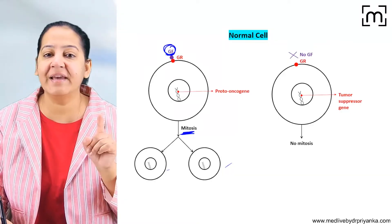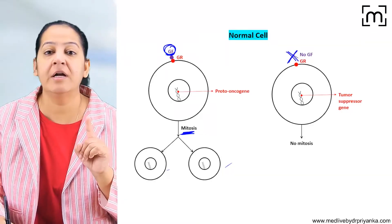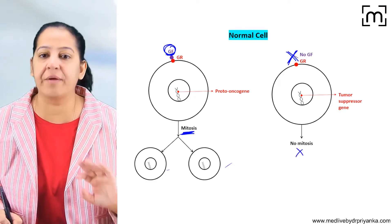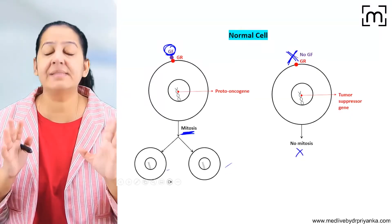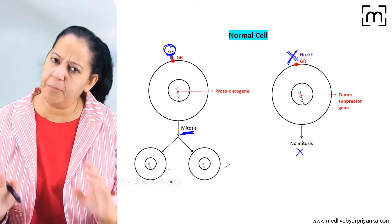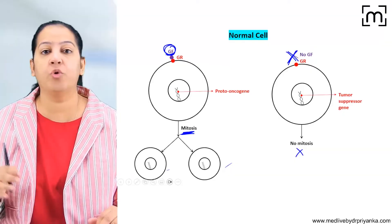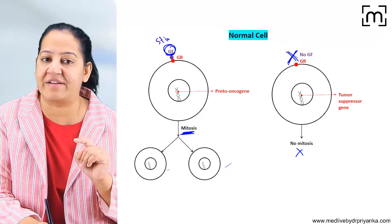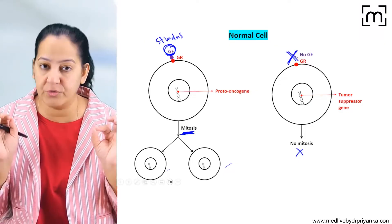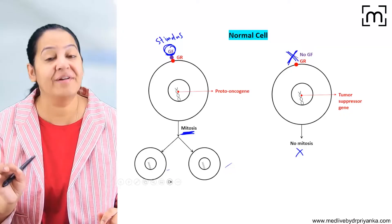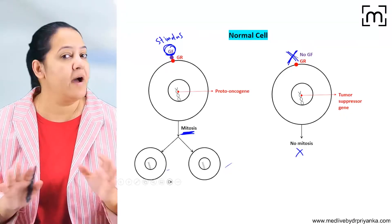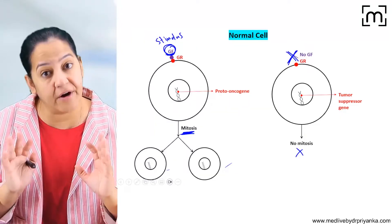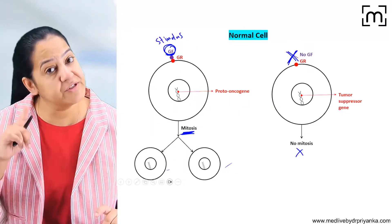In the other cell shown, the growth factor — the stimulus — is absent, so this cell is not undergoing mitosis. Both cells shown are normal cells. In the human body from head to toe, wherever mitosis is required, the stimulus — the growth factor — will come, bind with the growth receptor, and give the signal. Only then can mitosis occur; otherwise it cannot. Cell division is under physiological control.